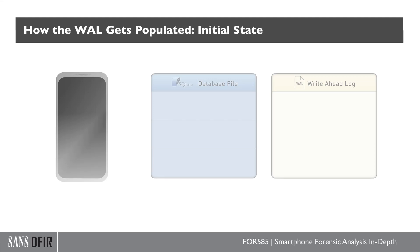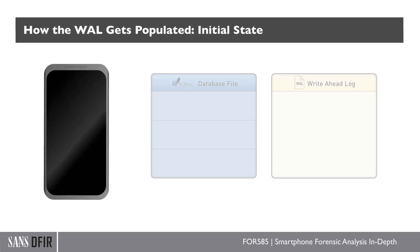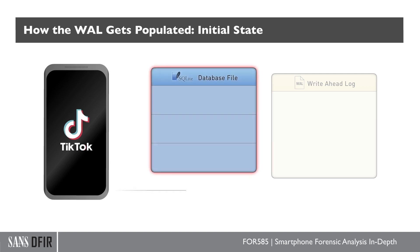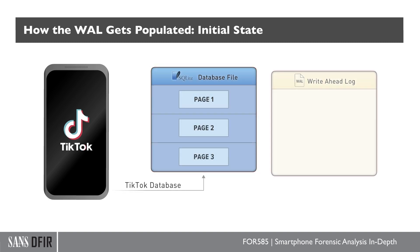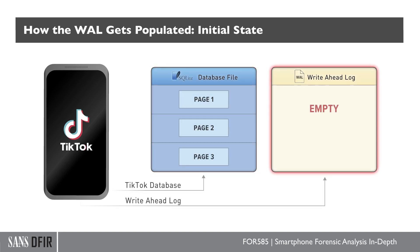Here's an example of the WAL and what happens. So we have an app — let's say we download TikTok. We have our database for TikTok, and we have our write-ahead log. The write-ahead log is empty.